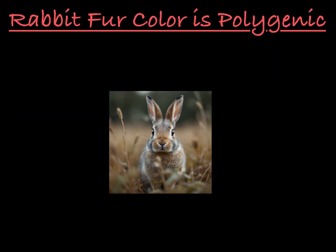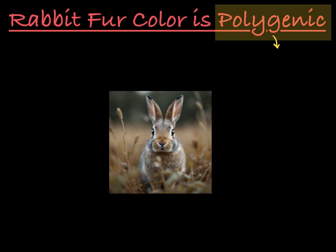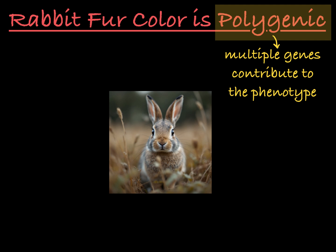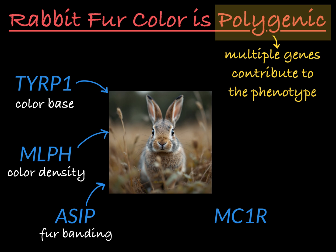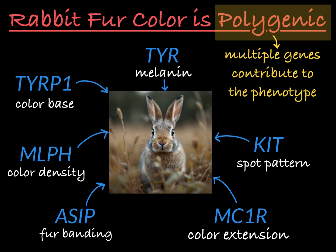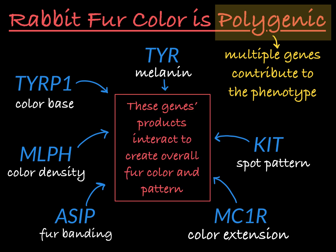One thing to keep in mind is that rabbit fur color is also a polygenic trait, meaning there are many other genes involved in creating the overall fur color and pattern of the rabbit. The gene TYRP1 controls the coat color base (brown or black). The gene MLPH controls how dense the color is in the fur. The gene ASIP controls patterning of the coat, whether each piece of fur has bands of color. The gene MC1R controls extension of color from the base of a piece of fur to its tip. And the gene KIT controls the pattern of spotting on the rabbit. So beyond TYR, you can have even more phenotypic variation in rabbits based on the genotype of each of these other genes and how their expression products interact with each other and with those of the TYR gene.